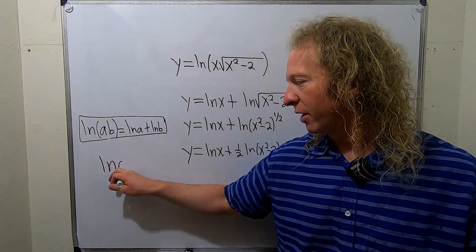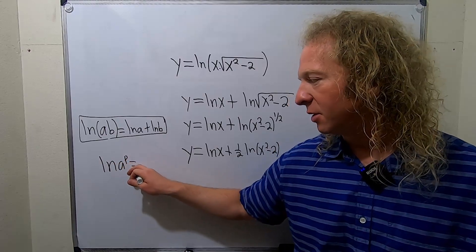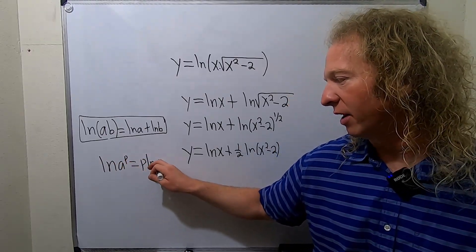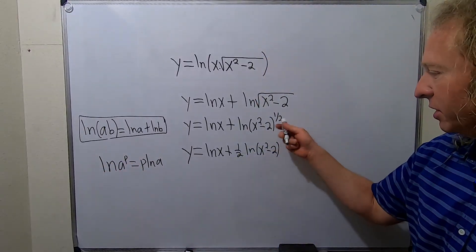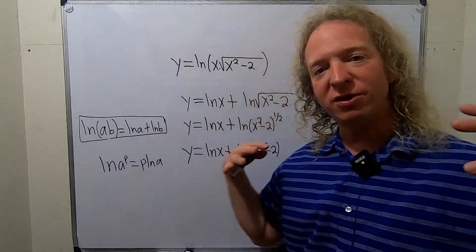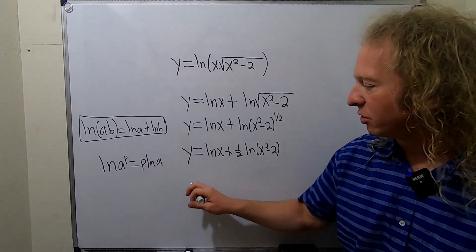So if you have the natural log of a to the p, that's equal to p natural log of a. If you have an exponent, you can just put it in the front. So we did that. Now we're finally ready to differentiate this. So let's go ahead and do it. So y prime.